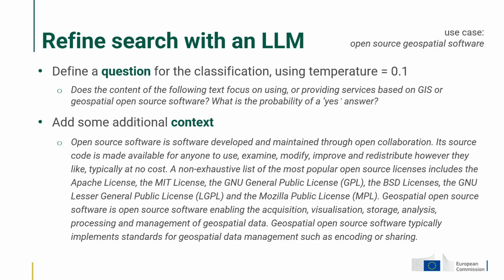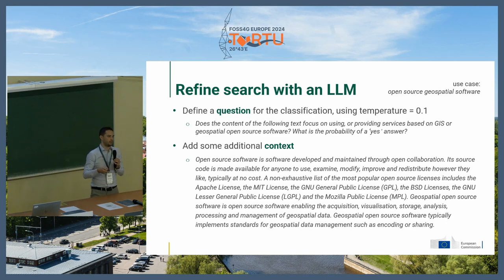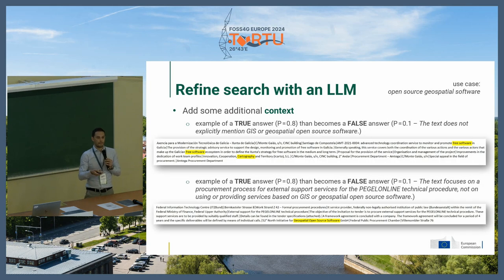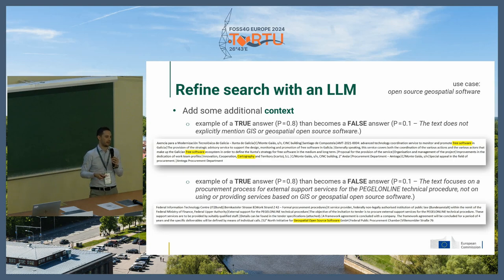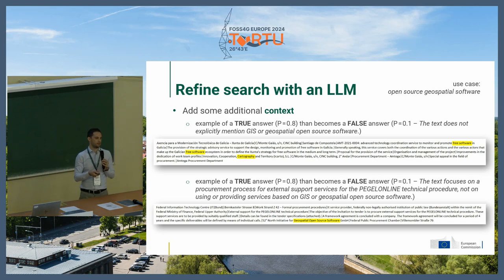We also try with and without context. Context means we give the model additional information to better understand what open source geospatial software is, which should help it provide the right classification. Here's a true answer that becomes false after adding the context — it speaks about free software and cartography, but cartography here looks like the name of a company. Another interesting case: a true answer that becomes false — this is a contract awarded to 52 North Initiative for Geospatial Open Source Software, but the procurement itself is not about open source.